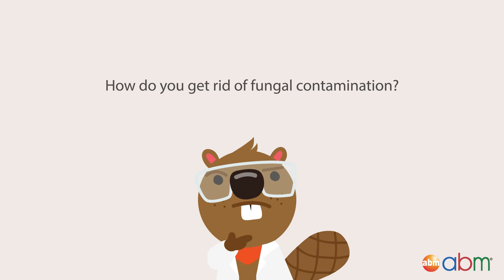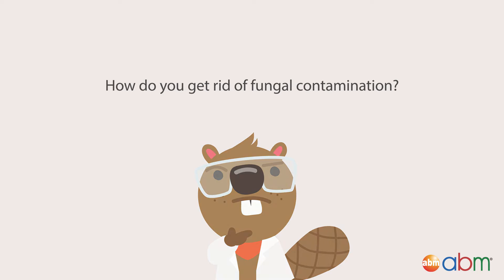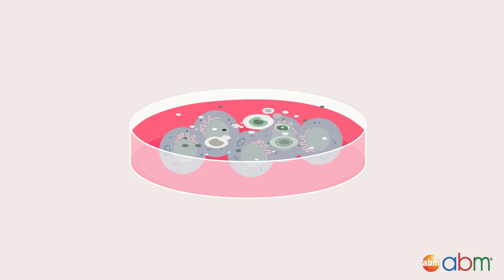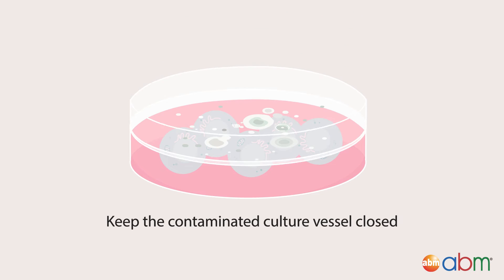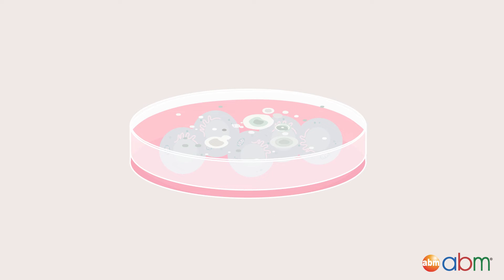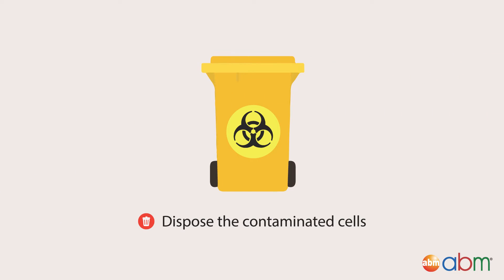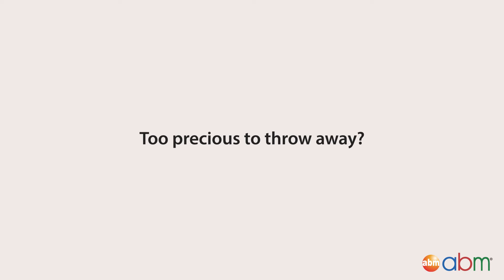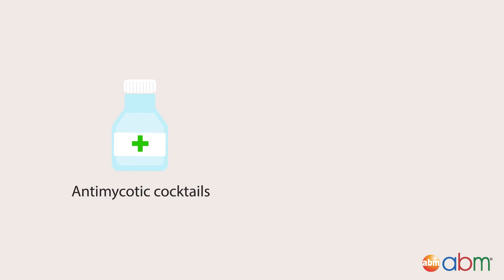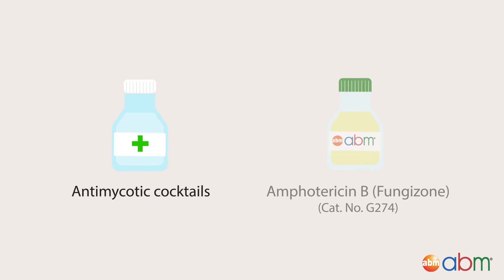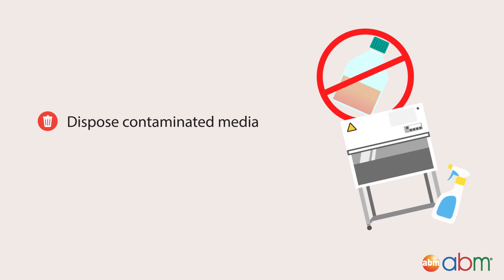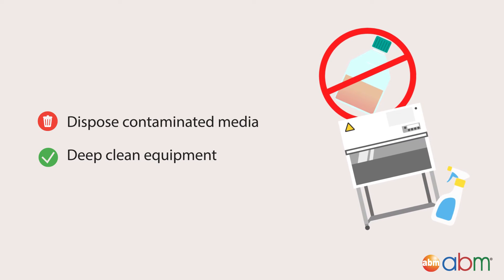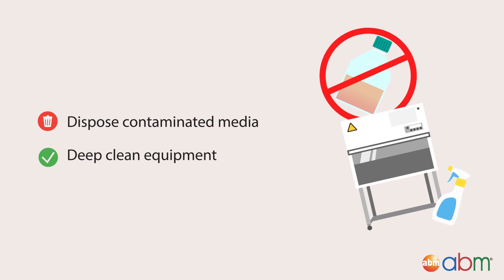So how do you get rid of fungal contamination? Similar to bacterial contamination, it is best to keep the contaminated culture vessel closed to avoid spreading spores and dispose of your contaminated cells if you can. If they're too precious to throw away, you can try using anti-mycotic cocktails or add an anti-fungal like fungizone, which contains amphotericin B. You'll also need to throw away your contaminated media and do a deep clean of your equipment to ensure all fungal spores are removed.